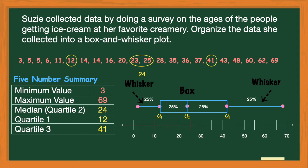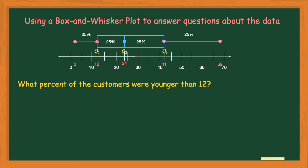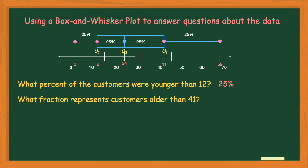For example, if asked what percent of customers were younger than 12: since 12 is at quartile one and younger means going to the left, that's the left whisker, which represents 25 percent of my data. For the question about what fraction represents customers older than 41: 41 is quartile three, and going to the right up to 69 also represents 25 percent. A fraction equivalent to 25 percent is one-fourth, so each section represents both 25 percent and one-fourth of the data.